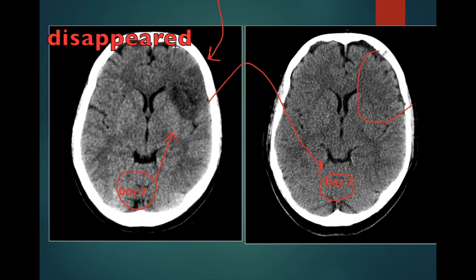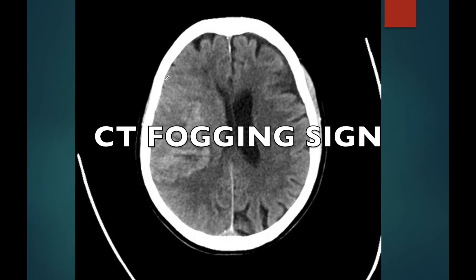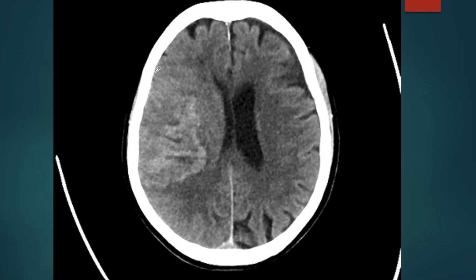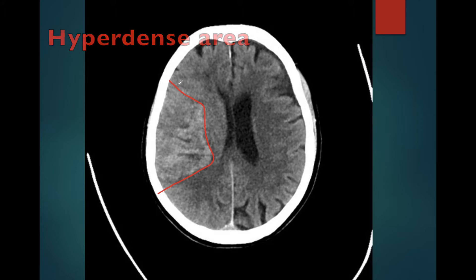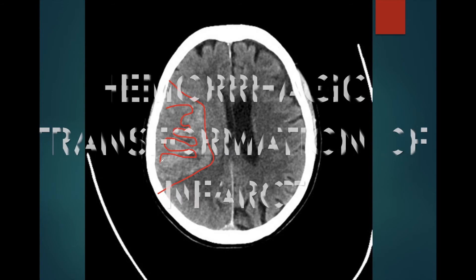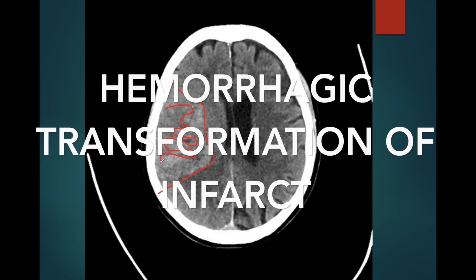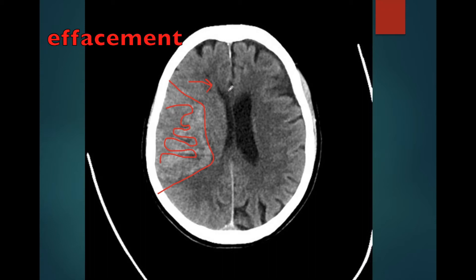In another case at day 8, this patient presented with hyperdense areas in the right frontoparietal region. We can see that the hyperdensity is gyreform in appearance — it resembles the gyri. This gyreform hyperdensity is consistent with hemorrhagic transformation of an infarct and is seen in subacute infarct. We can also see mass effect with effacement of the right lateral ventricle, which appears smaller in size compared to the left lateral ventricle.